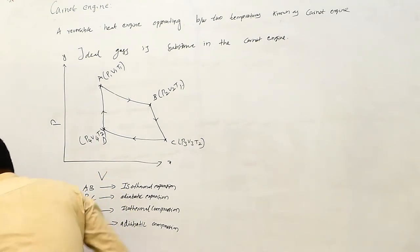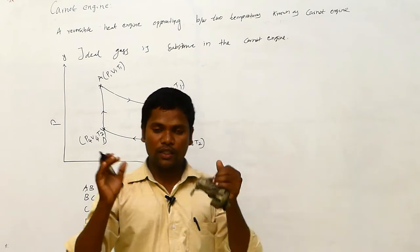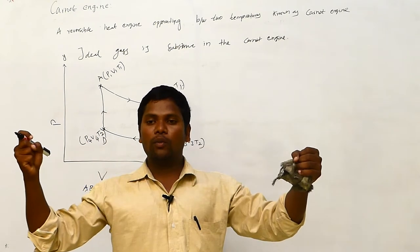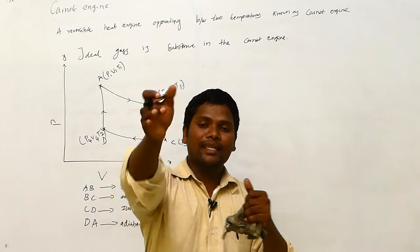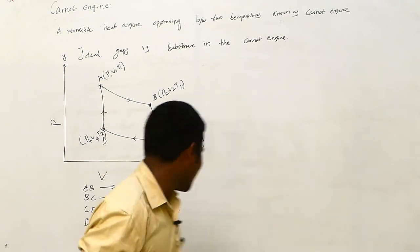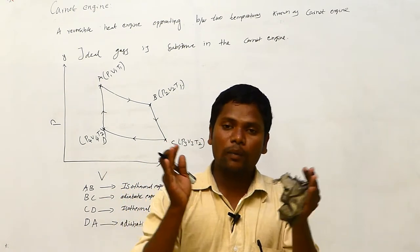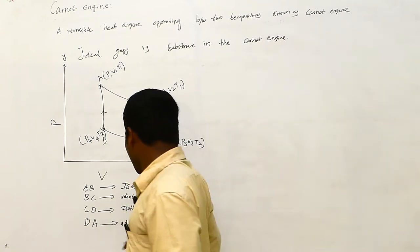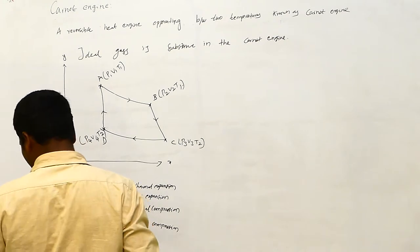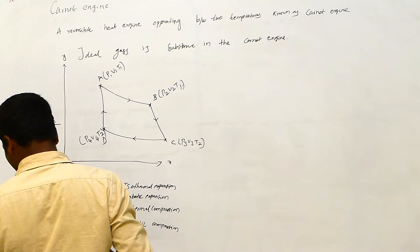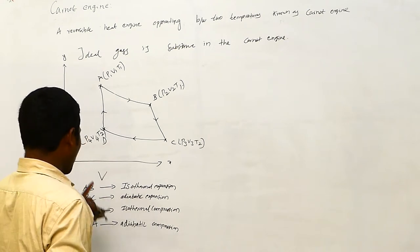Expansion means the length or volume is increasing — if you apply force to an elastic and it extends, that is expansion. Compression means the volume is decreasing — like squeezing a sponge so it comes closer together. So in total, the Carnot cycle has four processes: isothermal expansion, adiabatic expansion, isothermal compression, and adiabatic compression.